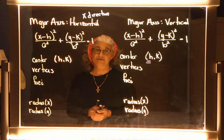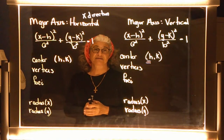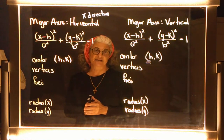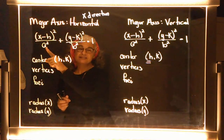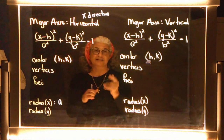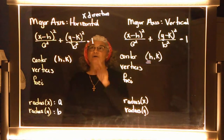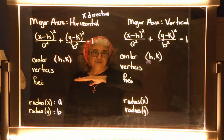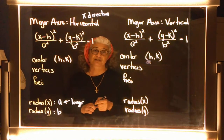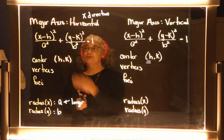a² is under the (x−h)² term. Just like with the circle, I take the square root of a² to get 'a', which is the radius in the x direction. The radius in the y direction is 'b'. Since the major axis is horizontal, the radius in the x direction is longer than in the y direction. Just like a circle, the center is (h, k).